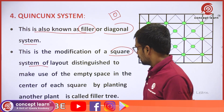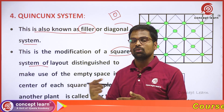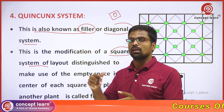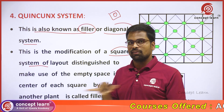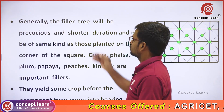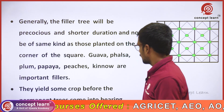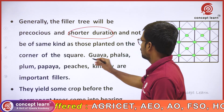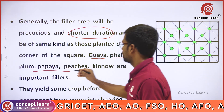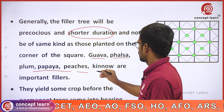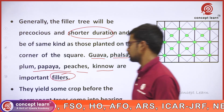If we start with the corner trees in a bearing star type, the center Filler Tree is harvested. Generally, the Filler Trees will be of shorter duration. As earlier discussed, Gawa, Falsa, Plum, Papaya, Peaches, and Kin-Kant are the important Filler Trees.